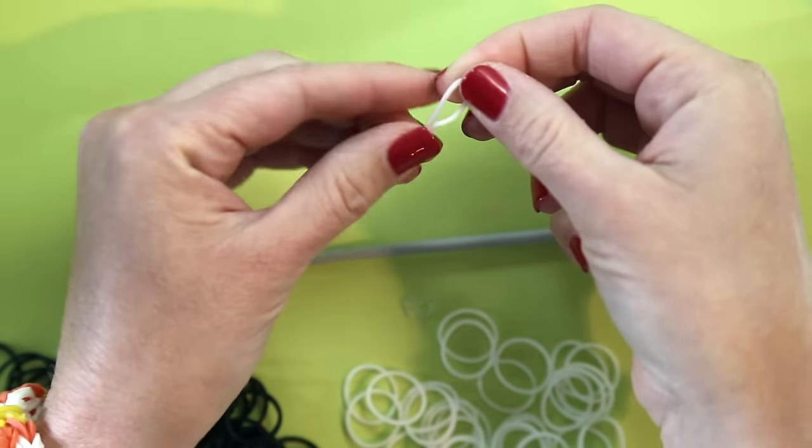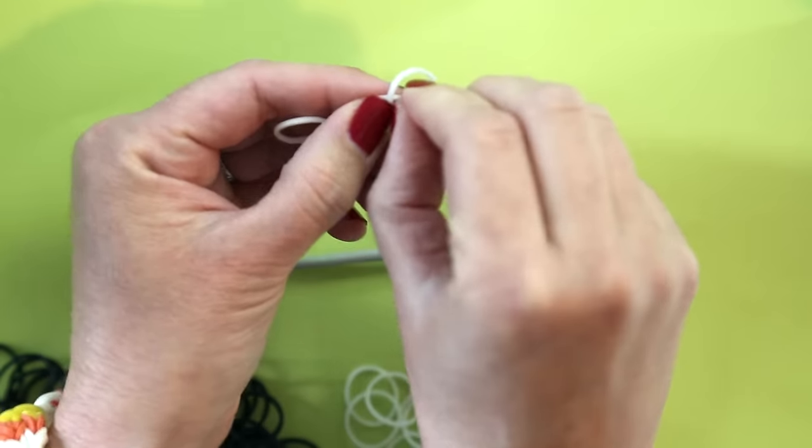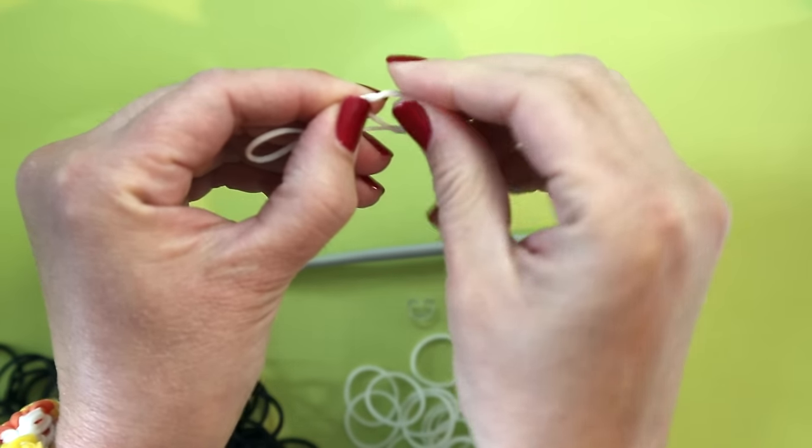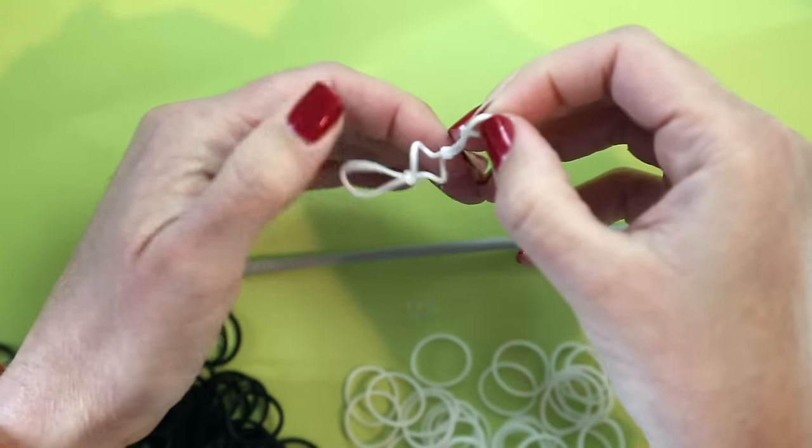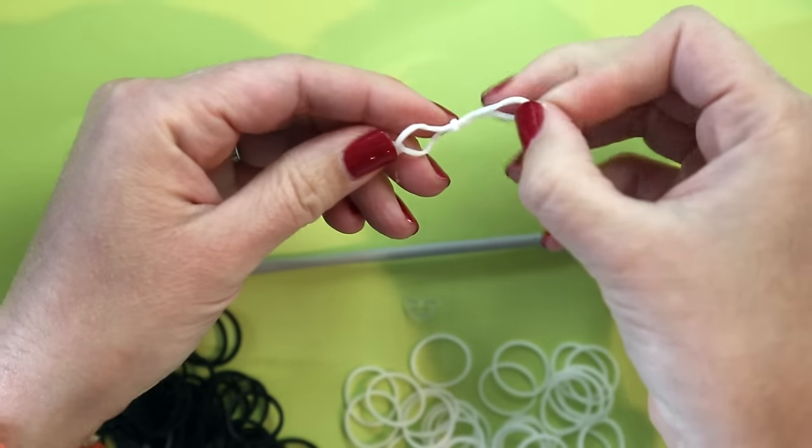And then keep going until you have the length that is comfortable for you to wear. I like to wear my bracelets with six bands across. You may need it a little bit bigger or a little bit smaller.